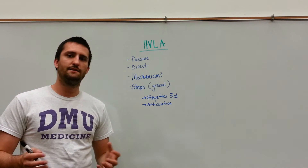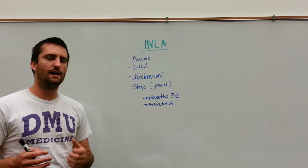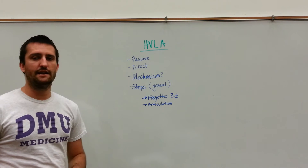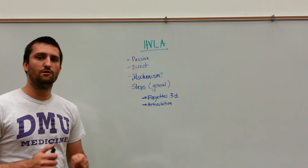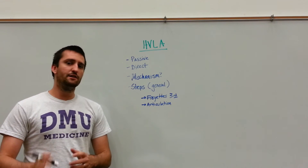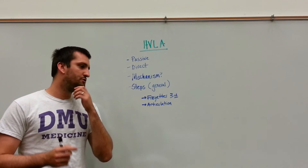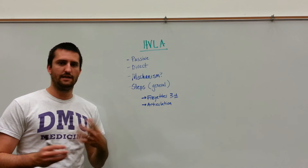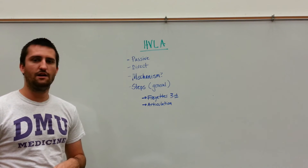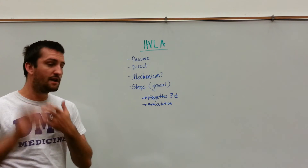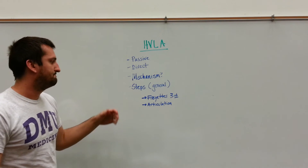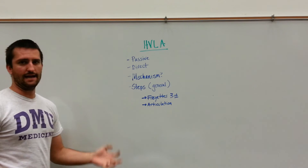What you're going to be doing is finding a restriction to begin. You're going to palpate and use static and dynamic motion testing to find a restriction. Then you're going to place the body into the restrictive motion. So if I'm restricted to the left in head rotation, I would rotate the head to the left, for example, and then ask the patient to relax.